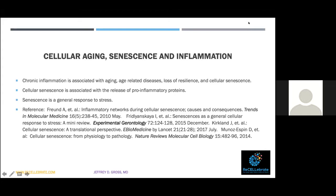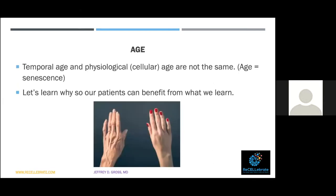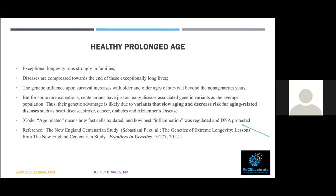Chronic inflammation is associated with age-related diseases, loss of resilience, and cellular senescence. Senescence is also associated with the release of pro-inflammatory proteins — so inflammation causes cells to age, and aging cells release more pro-inflammatory signals, meaning aging accelerates aging. Senescence is a general response to stress. Temporal age and physiological age are not the same. The New England Centenarian Study noted that exceptional longevity runs strongly in families, and diseases are compressed toward the end of those exceptionally long lives.